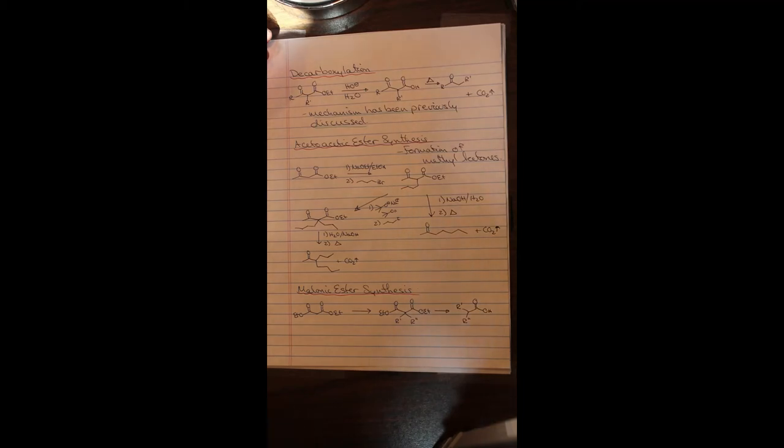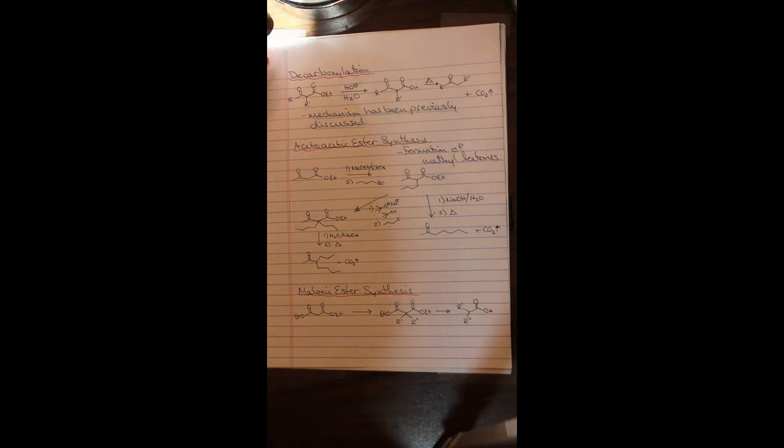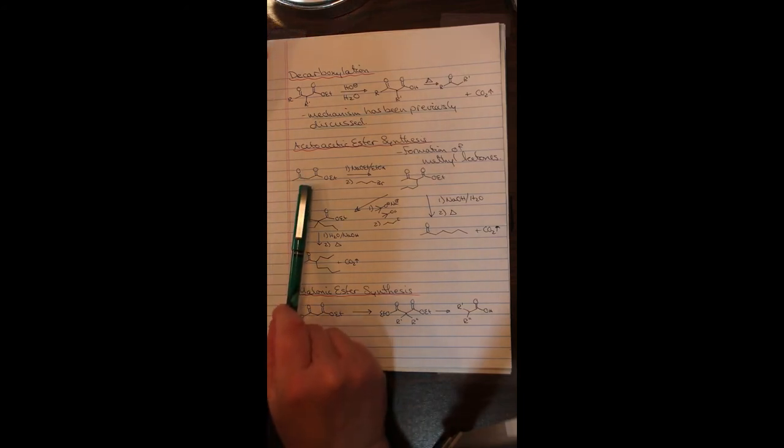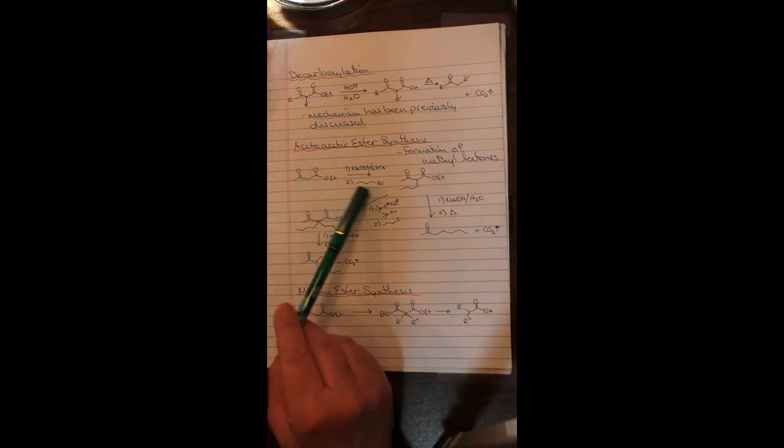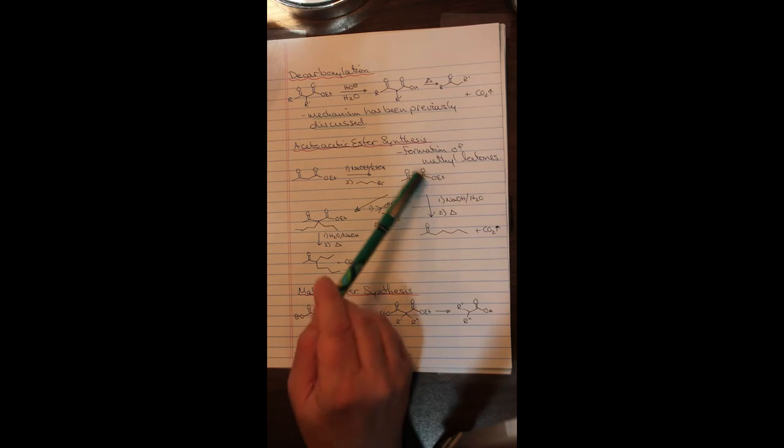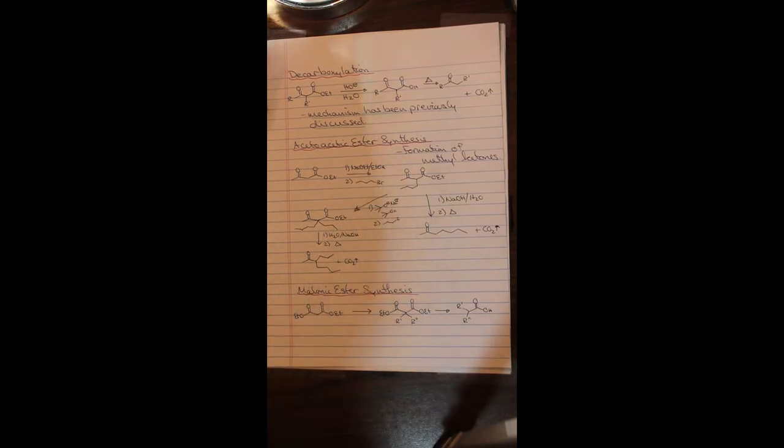So underneath this is the acetoacetic ester synthesis. And this is for the formation of methyl ketones. And again, the chemistry here is everything that we've been seeing recently. We generate an ester, we then treat this with an alkyl halide, in this case, one bromo butane. And now we generate our substituted species, we can hydrolyze it to the carboxylic acid, and then remove the carboxylate group to generate this ketone. Or we could add a second alkyl group to generate this species, which then we subsequently hydrolyze and decarboxylate.